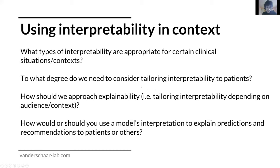Fourth roundtable question: using interpretability in context. Now that we have different types of interpretability and could build recommender systems showing different types of explainability in different situations — to what degree do you need to tailor interpretability to specific patient types? How should you use a model's interpretation to explain predictions to patients in different contexts, and how would you use this toolset to build a better ecosystem and provide the intelligence you need?